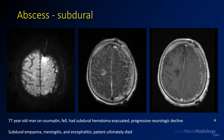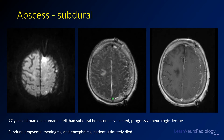This is a 77-year-old man on Coumadin who fell, had a subdural hematoma that was evacuated, and subsequently developed progressive neurologic decline. On diffusion there is artifact from surgery, but you can see fluid outside the brain parenchyma with scattered areas of abnormal diffusion both in the extra-axial space and the subarachnoid space. FLAIR is much more pronounced, showing incompletely suppressing material along the falx in the subdural space, abnormal material in the sulci bilaterally, and an extra-axial collection — all complications of a subdural empyema.